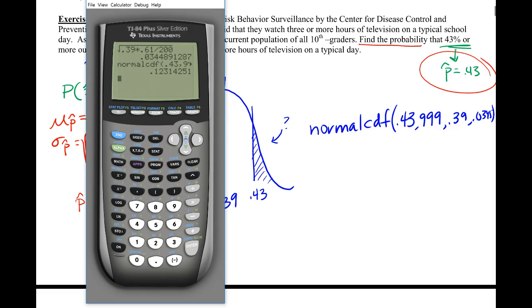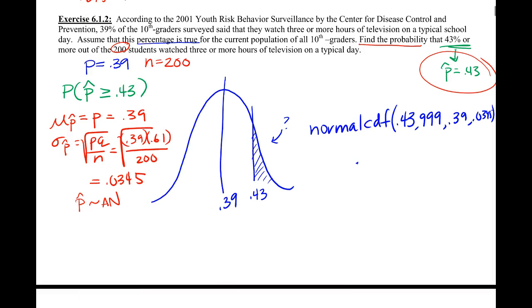So it looks like our probability is 0.1231, so around a 12% chance that you would find 43% or more of them using that. So that's it, that's our last example of 6.1. We will have a worksheet with some of this to start class on Thursday.